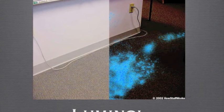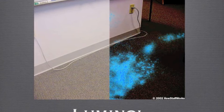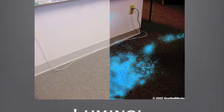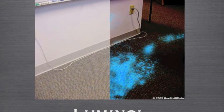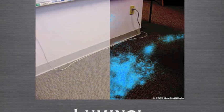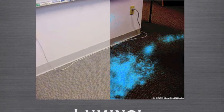Luminol causes blood to fluoresce. Even if the blood has been cleaned up, there is still enough residue to cause the stain to show up when the lights are turned off. You cannot see it in white light, and it only stays visible for about 30 seconds to a minute, so you have to work quickly and take photographs to document the blood stain.